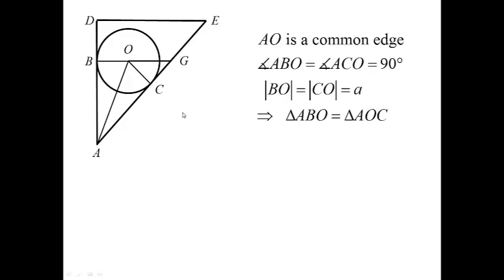First, let me pay attention to the triangles ABO and the triangle AOC. In these triangles, the edge AO is common. The angles ABO and ACO are equal to 90 degrees, and BO and CO are the radius. Therefore, these two triangles are equal.